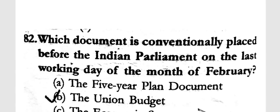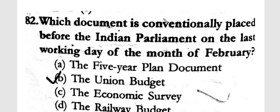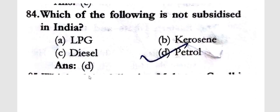The Union Budget is presented on the last working day of the month of February before the Union Parliament. Which of the following is not subsidized in India? The answer is petrol — there is no subsidy on petrol.